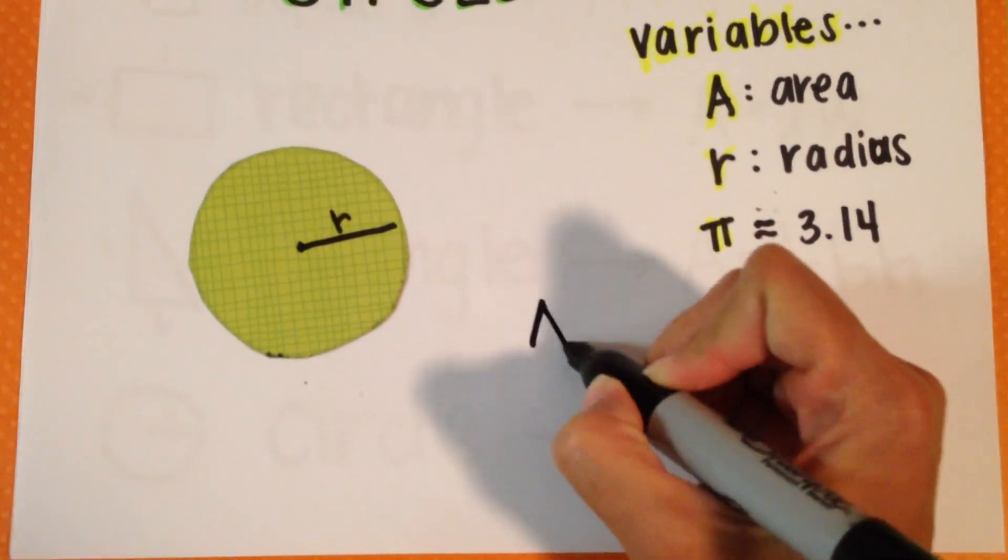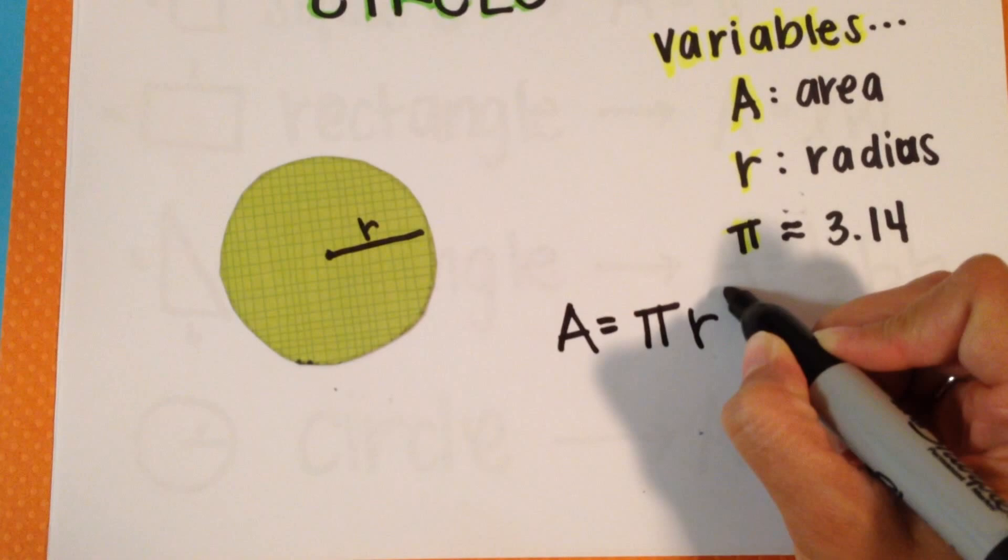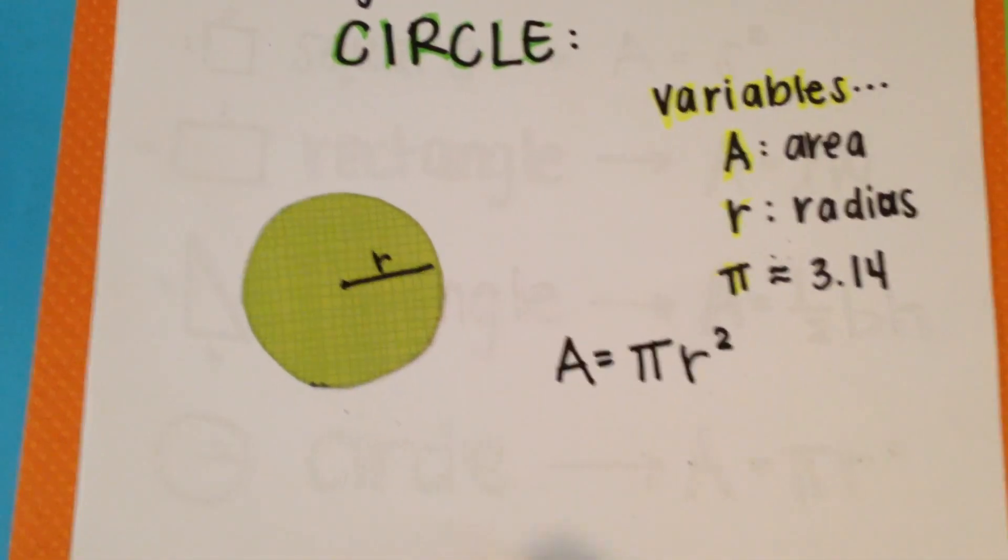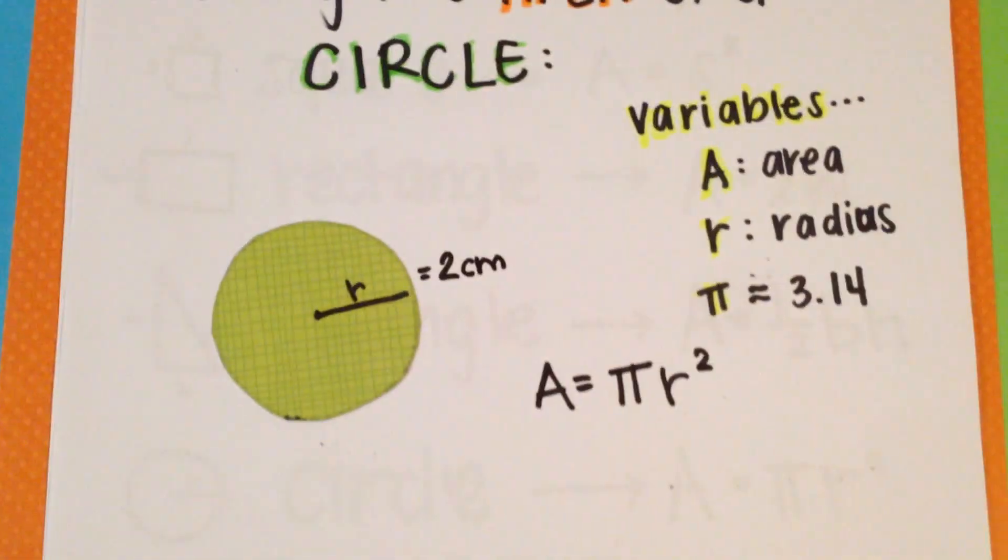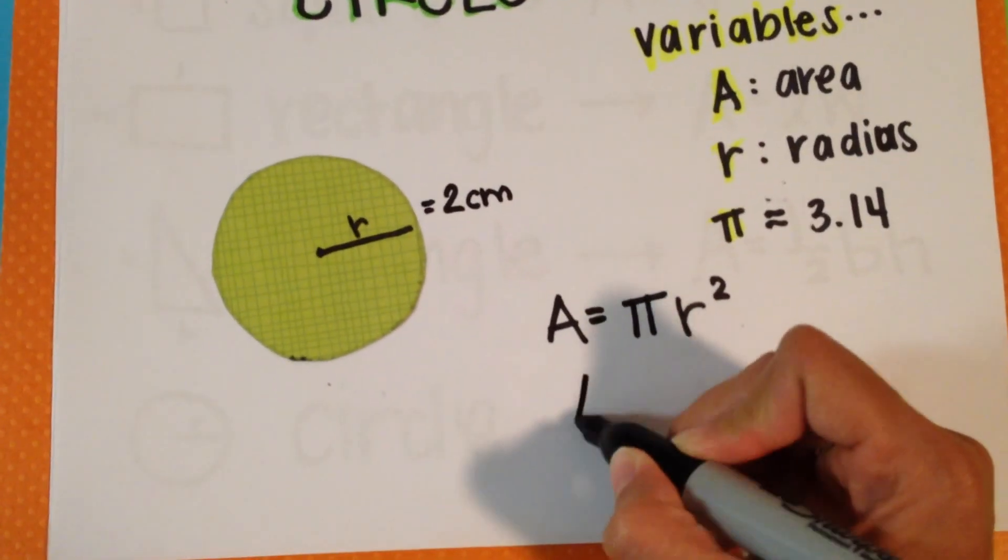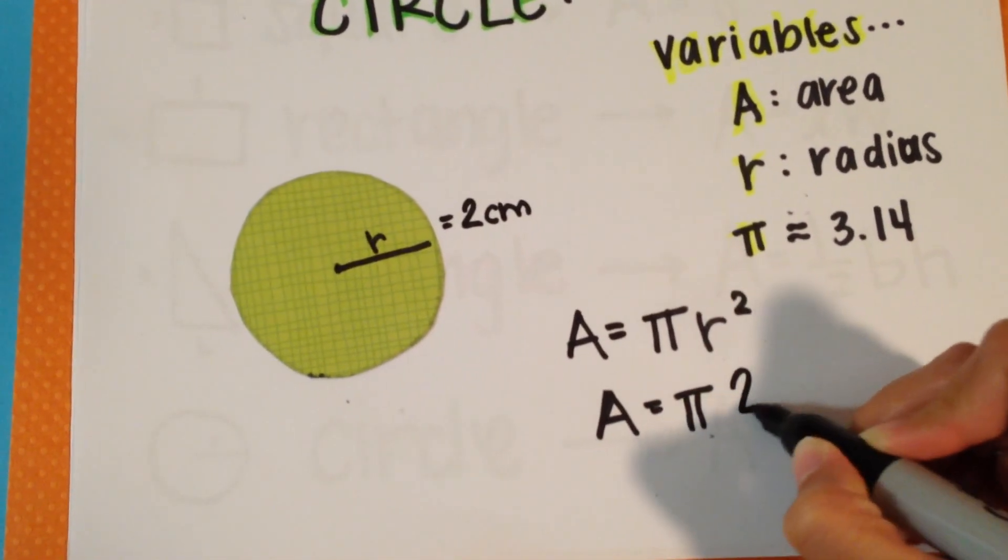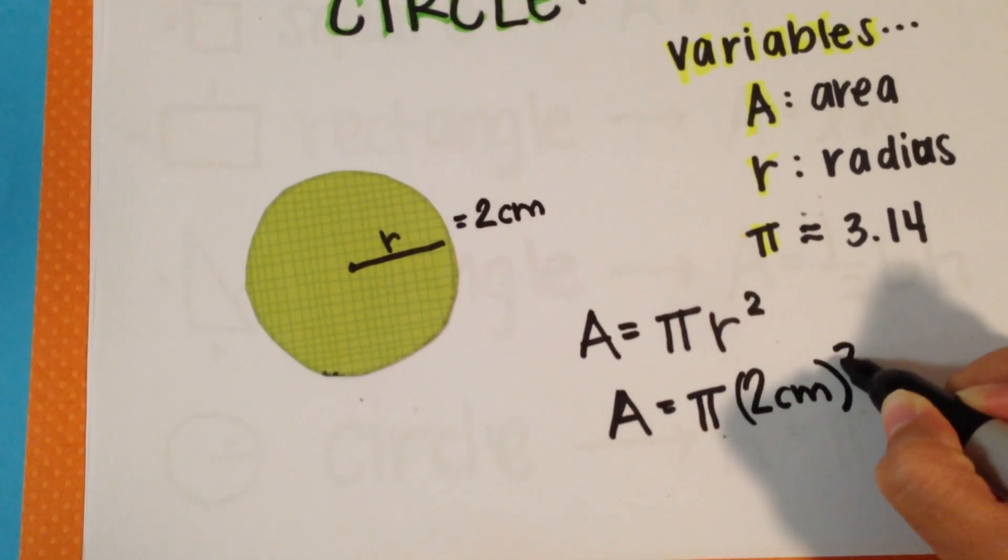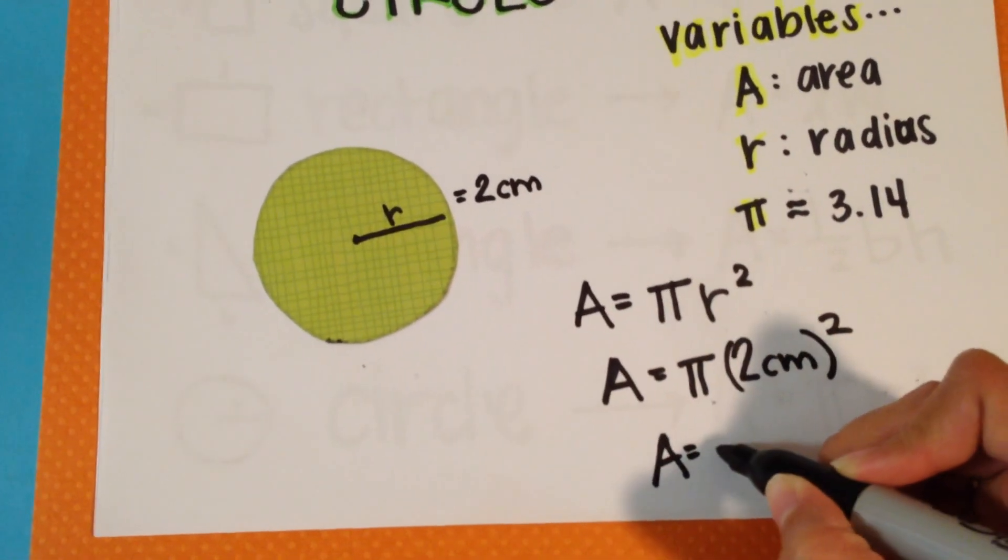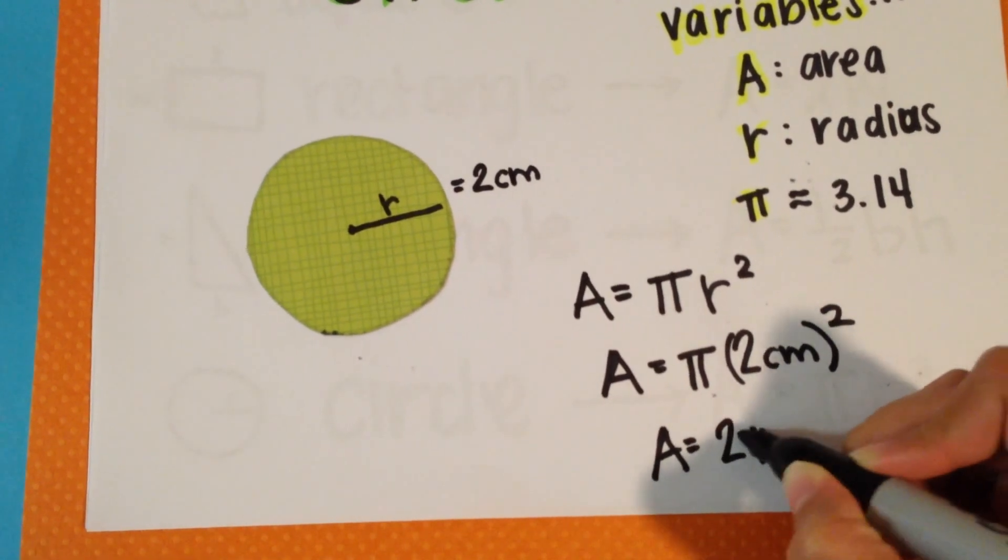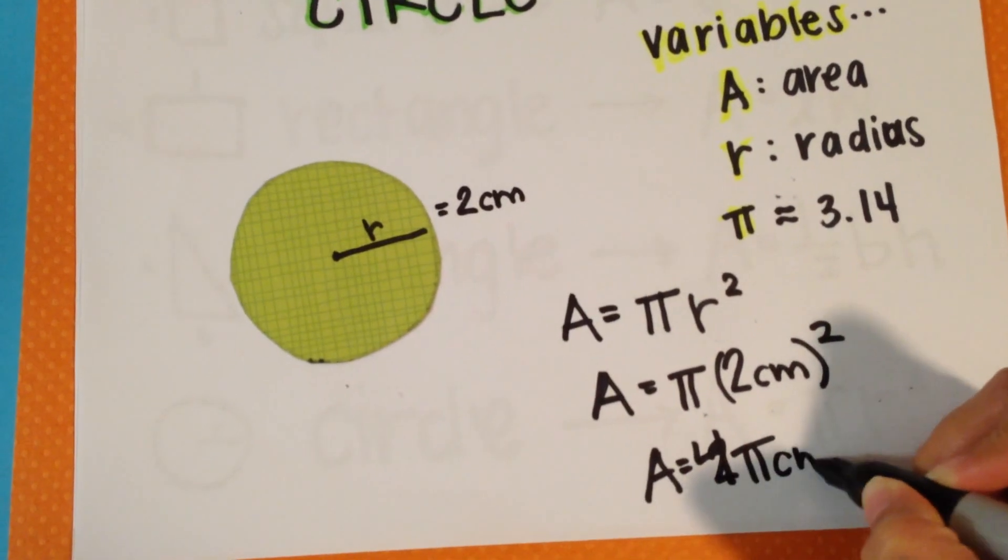Our area for a circle is A equals pi r squared. So say we had a radius of 2 centimeters. Our area will be pi times 2 centimeters squared, giving us a total area in this form, which we can leave it in as 2 pi or 4 pi centimeters squared.